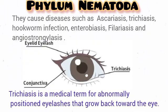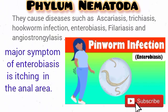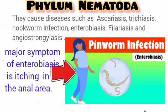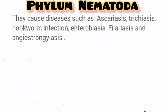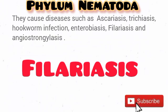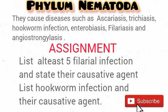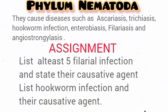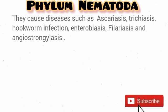Diseases caused include ascariasis, caused by Ascaris lubricoides; trichiasis, which causes eyelashes to grow inward towards the eyes; and Enterobius infection, which causes itching of the anal region — also regarded as pinworm infection — as well as filariasis and hookworm infection. As an assignment, highlight a list of filarial infections and their causative agents, as well as hookworm infections and their causative agents, noting which are neglected tropical diseases.